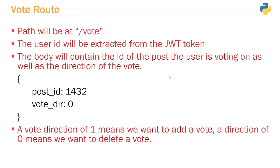There are a couple of things we need to take into consideration when setting up the vote route. First, what is the path we're going to use? It makes sense to set up a new path called slash vote, just like we have slash users for handling anything with users, and slash post for handling anything with posts. We're going to have slash vote for handling voting.